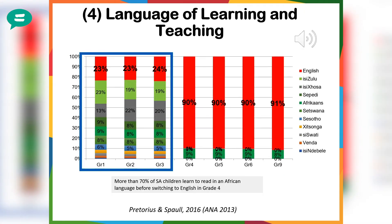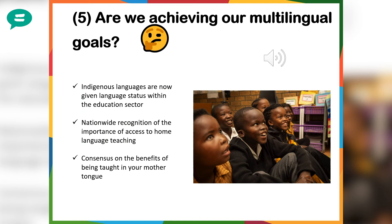To paint a picture of that language policy in practice: statistics show that from Grade 1 to 4 there are kids being taught in all official languages. But when you shift to Grade 4, the majority of kids make the crossover to having English as a language of learning and teaching. The biggest question currently is whether we are achieving our multilingual goals, given our political history of language division. Is the education system doing justice in readdressing language issues?